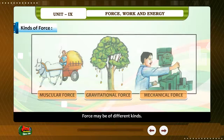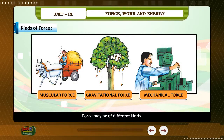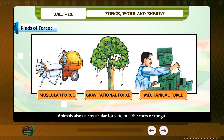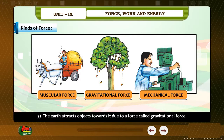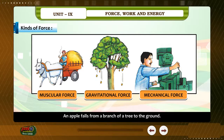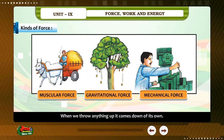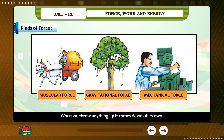Kinds of Force. 1. We use muscular force in all the above examples. Animals also use muscular force to pull carts or tongas. 2. The force applied with the help of a tool is called mechanical force. 3. The earth attracts objects towards it due to a force called gravitational force. An apple falls from a branch of a tree to the ground. When we throw anything up, it comes down on its own.